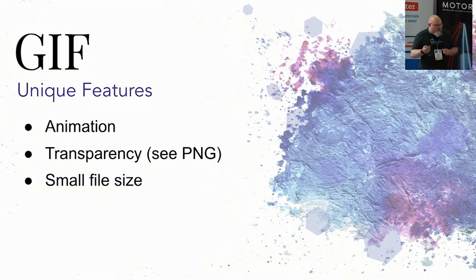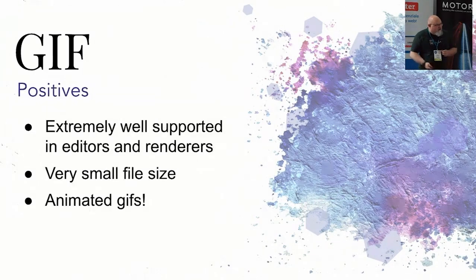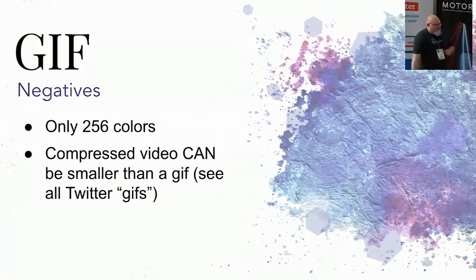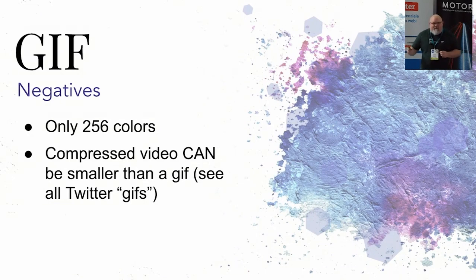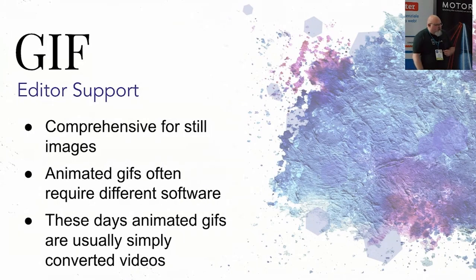You can have animation, transparency, and small file size with GIF — these are the things to consider when choosing it. Positives: extremely well supported in editors and renderers, very small file size, and animated GIFs — where would we be without them? Negatives: only 256 colors, and compressed video can actually be smaller than a GIF. Not many people know this, but all the GIFs you see on Twitter are actually videos — they convert them on the fly because video is smaller. Editor support is comprehensive for still images; animated GIFs often require different software.